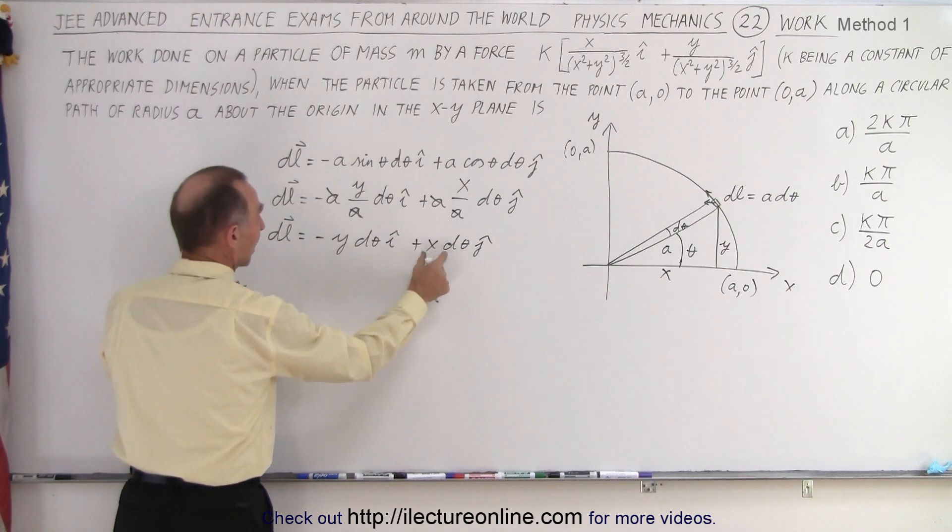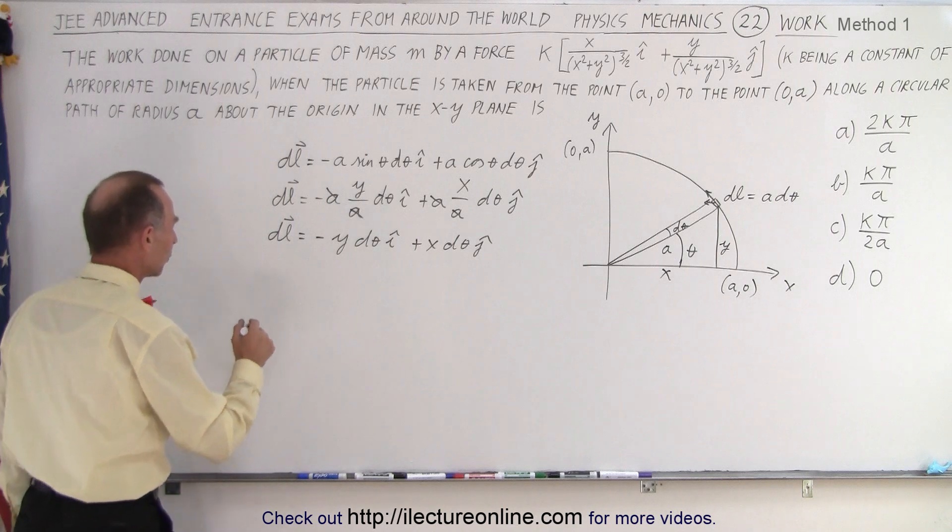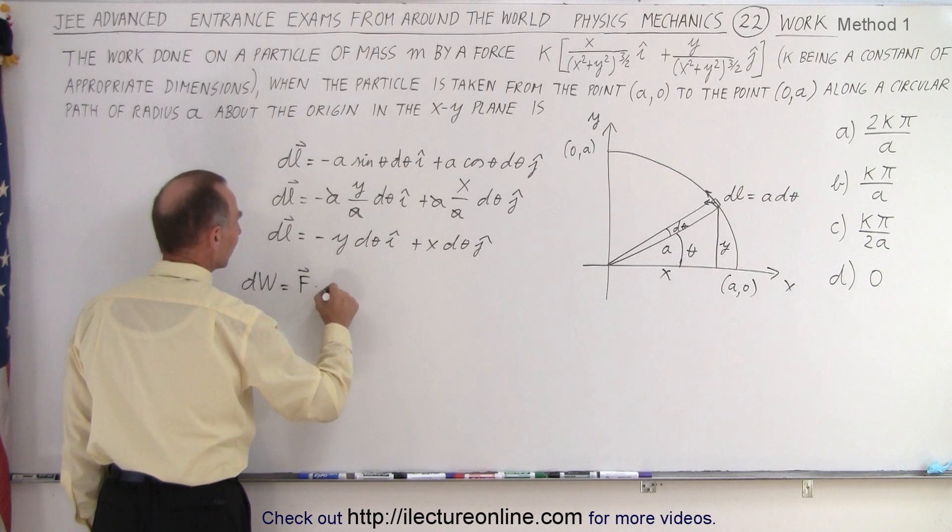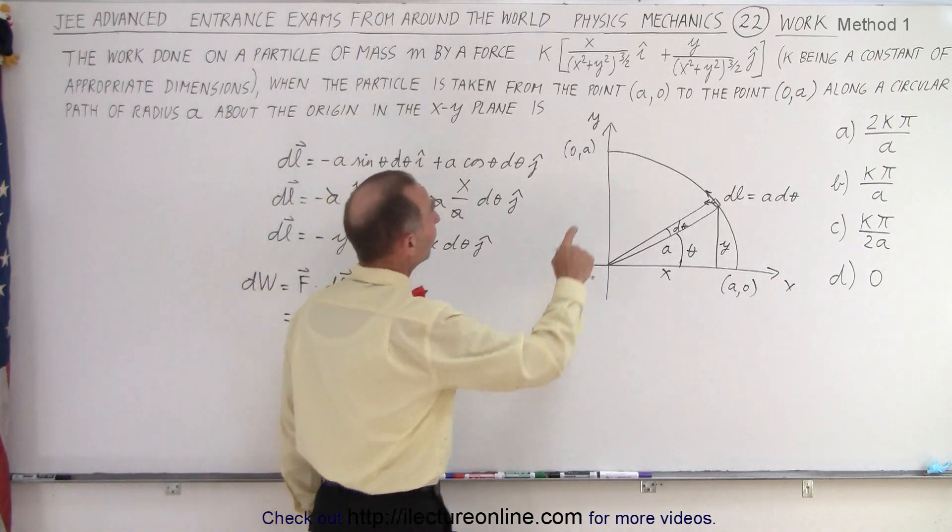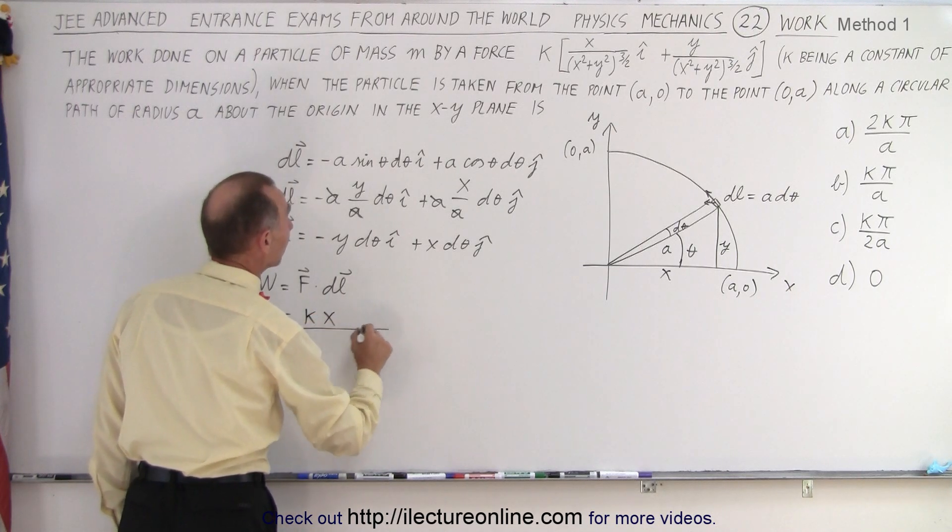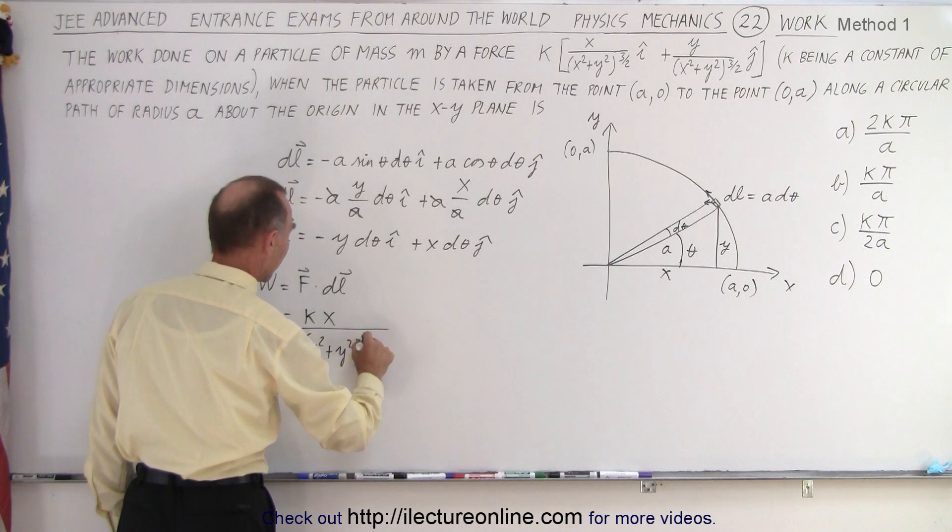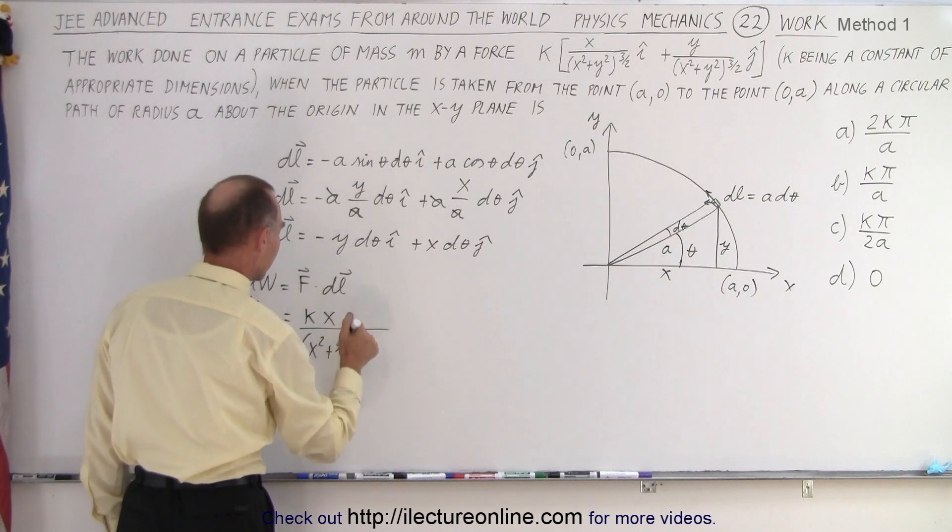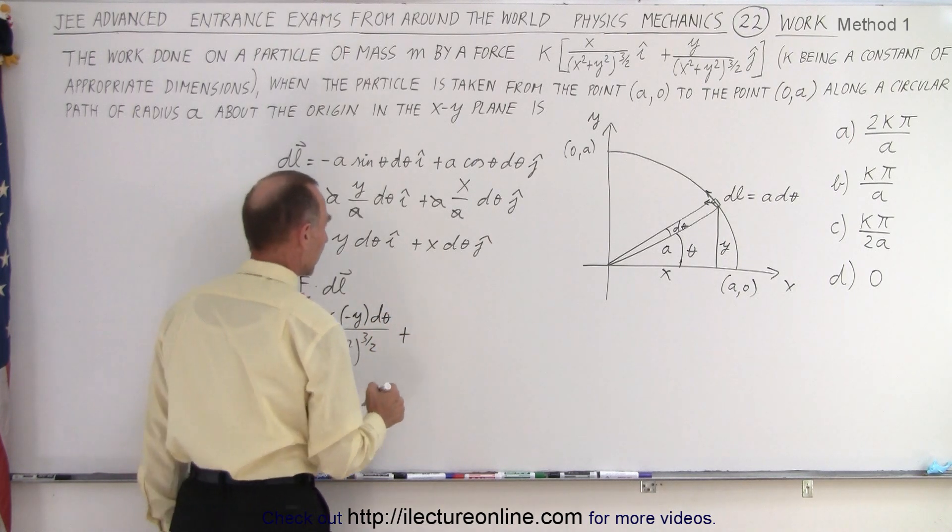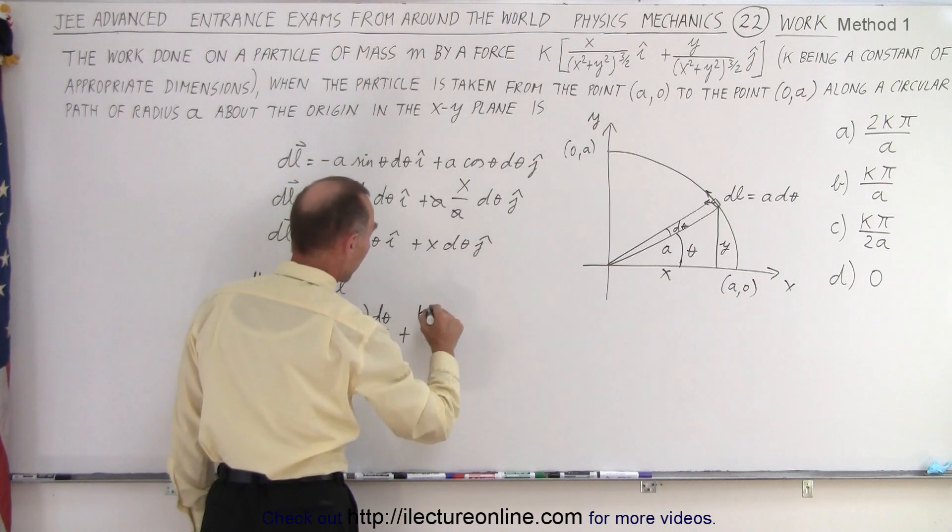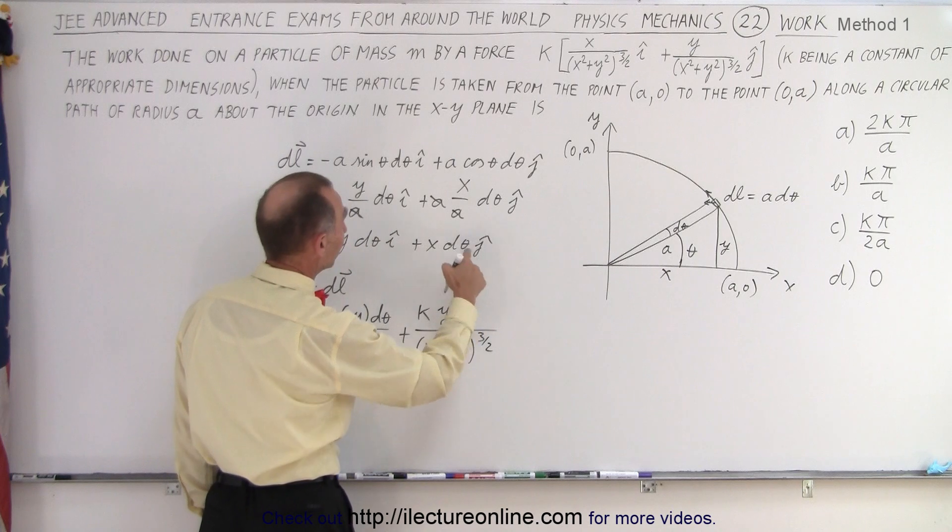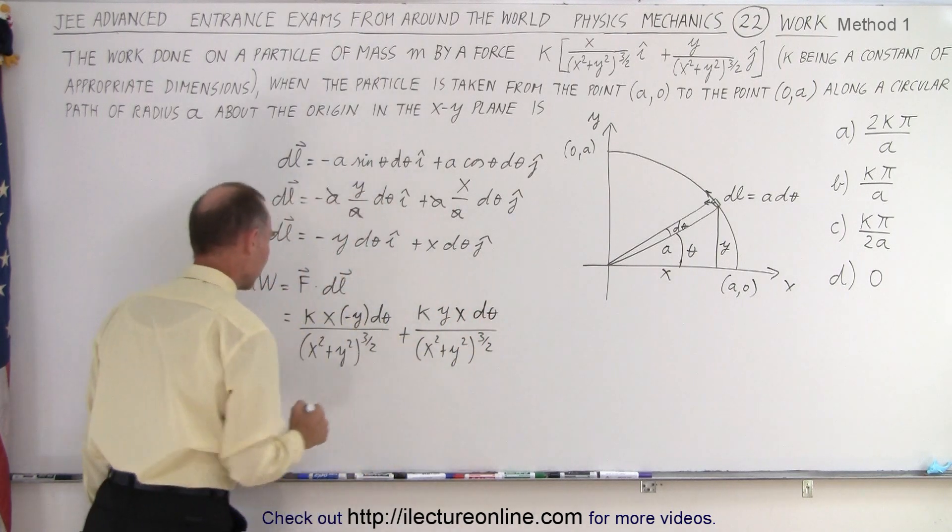even though our differentials are not matching up with X and Y, we'll just leave it like that for a moment. We're now going to write dW, a small work element for a small motion on the particle is equal to F times DL. And so our F, our force is equal to this. So that would be equal to K times X divided by (X squared plus Y squared) to the three halves power times DL times the magnitude in the I direction of DL times d theta, and then we get plus